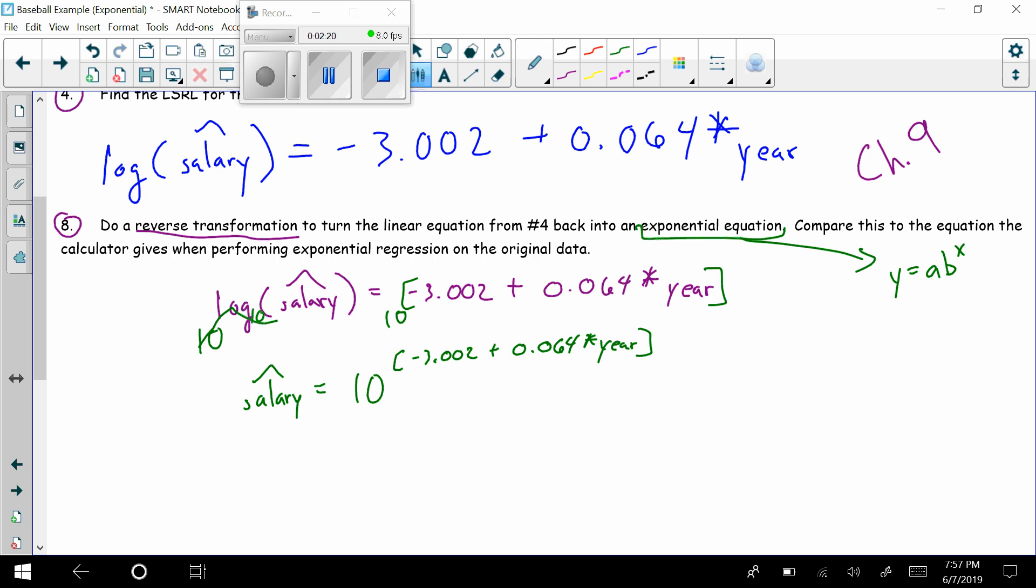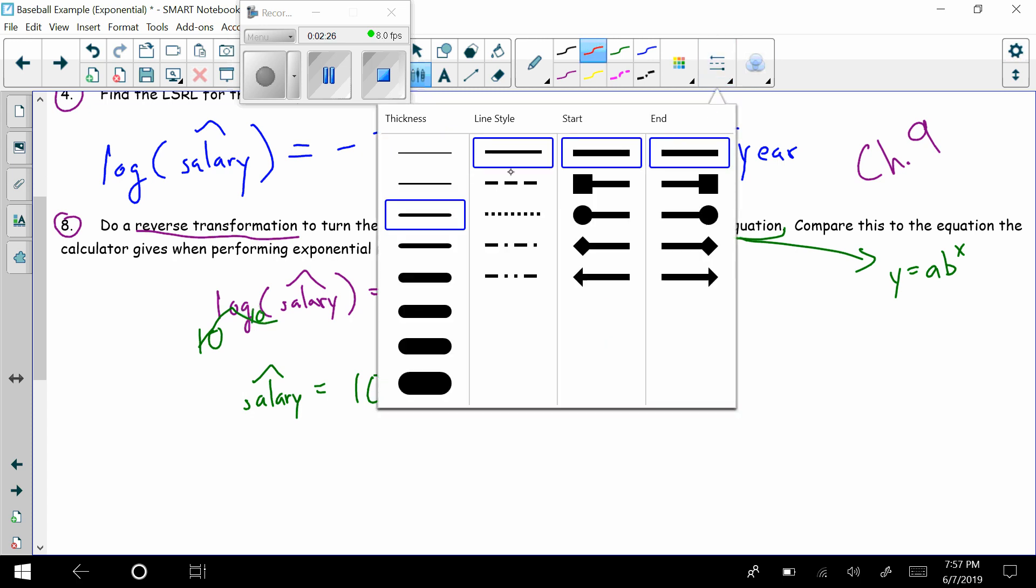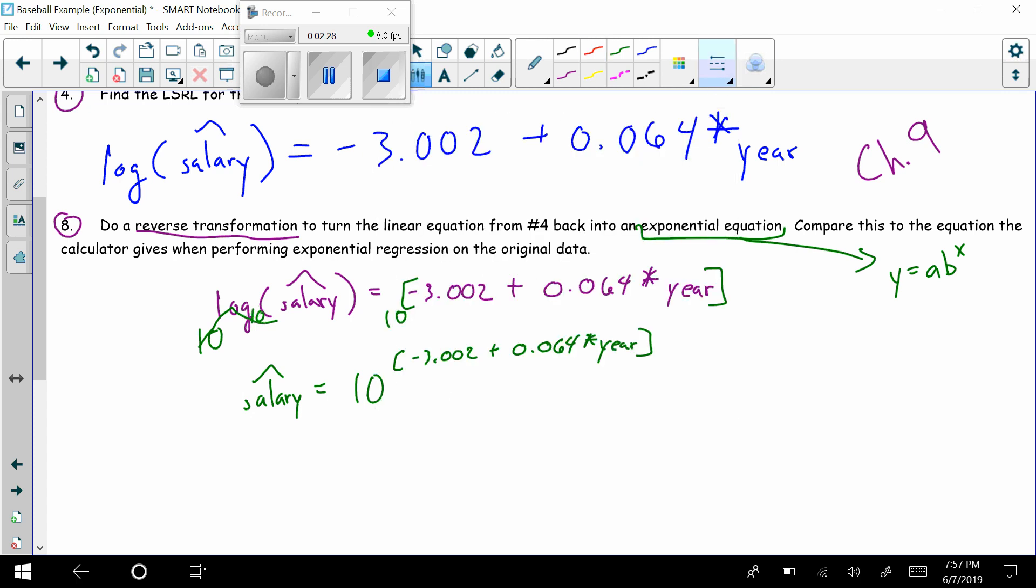So what we're going to do is we're going to see if we can split this thing up. Now everybody in here has been through a second year algebra course. So you should know that if I asked what x² × x³ was, you can tell me that's x^5, right? Because when you multiply with a common basis, you add the exponents.